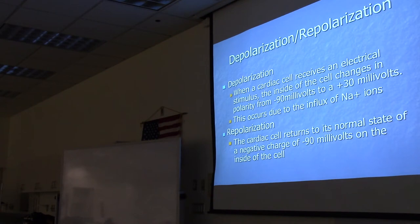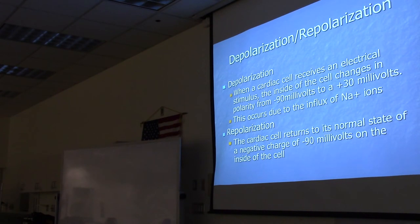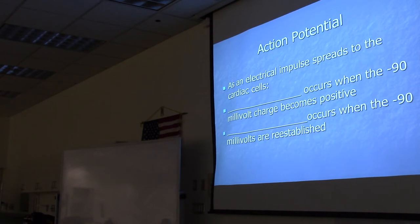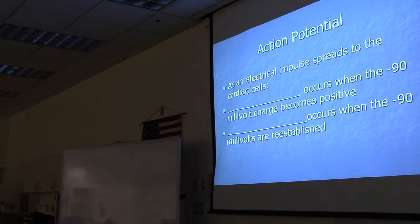After the cell contracts, the ions return to their normal positions — sodium goes back out of the cell, and the charge returns to negative on the inside. This return to a negative charge is called repolarization. To summarize: depolarization is when the inside of the cell goes from minus 90 millivolts to plus 30 millivolts, enabling contraction. Repolarization is when it returns to the resting charge of minus 90 millivolts.